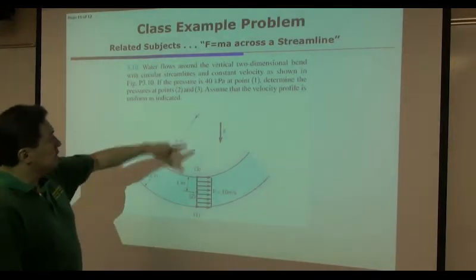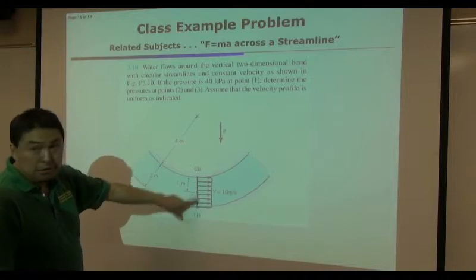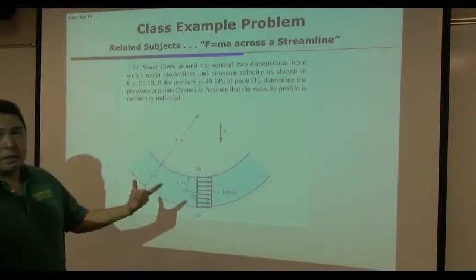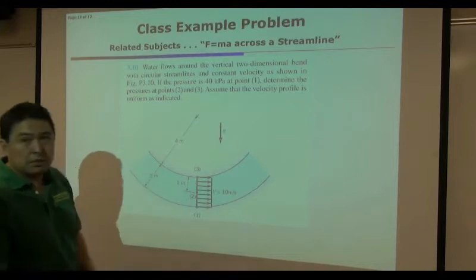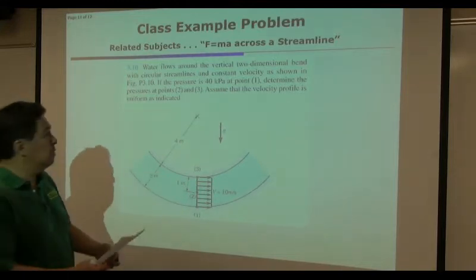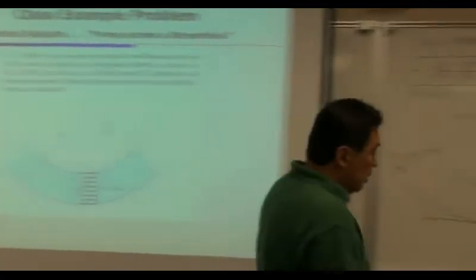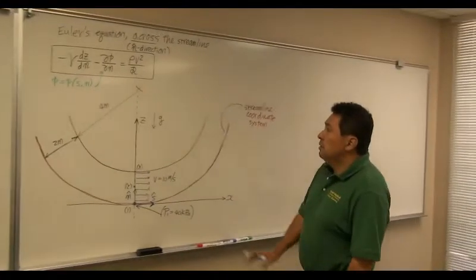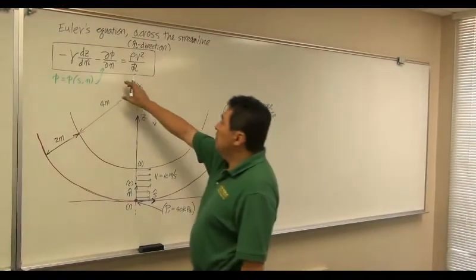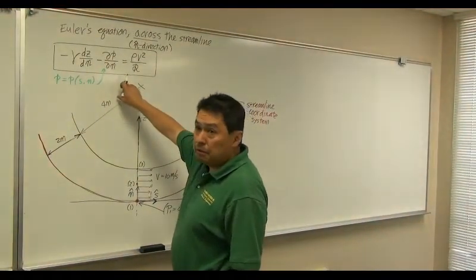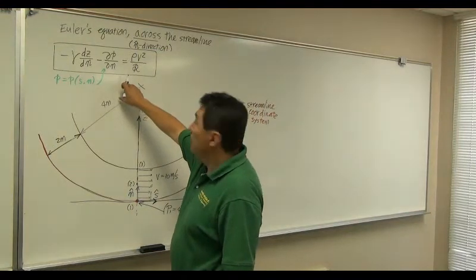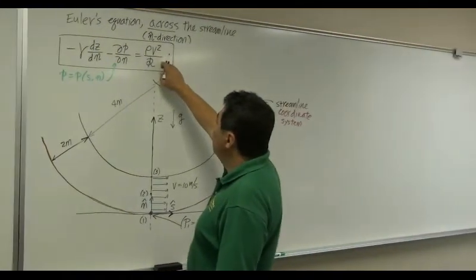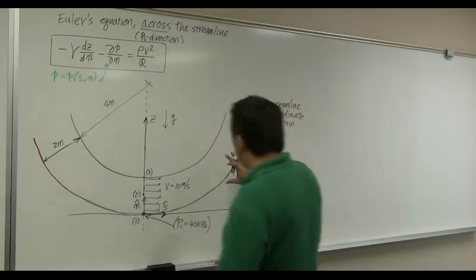Let's assume for simplicity that the velocity is uniform throughout points 1, 2, and 3, which is highly unlikely for pipe flow, but let's assume that to simplify the problem. We are going to start from Euler's equation we developed.